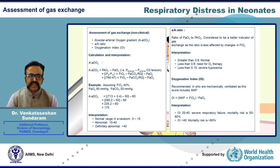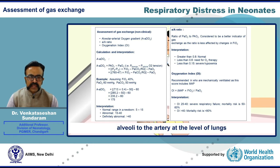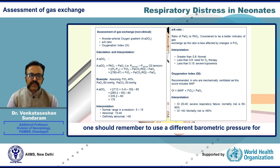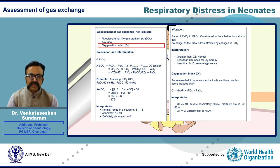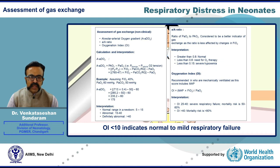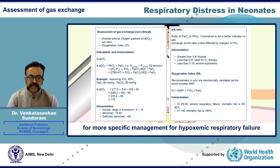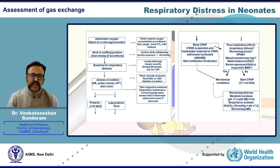Gas exchange should also be assessed using non-clinical indices. The most commonly used is the alveolar-arterial oxygen gradient — the higher the gradient, the less efficient the oxygen transport from alveoli to artery. One should use the correct barometric pressure for your city based on altitude above sea level. The oxygenation index is another, probably better, measure in mechanically ventilated neonates: an OI less than 10 indicates normal to mild respiratory failure; above 20 indicates need for more specific management. The oxygen saturation index, which replaces PaO2 with pulse saturation, is a more recent simpler index but requires more data before routine clinical use.